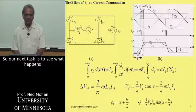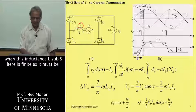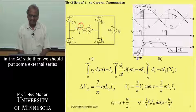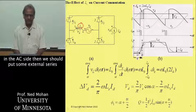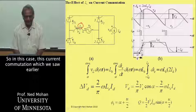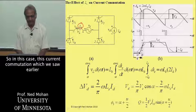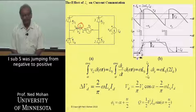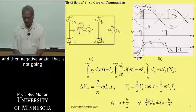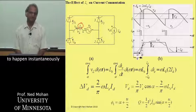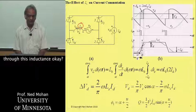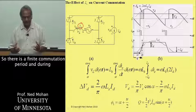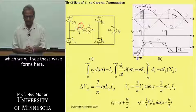Our next task is to see what happens when this inductance L-sub-S is finite, as it must be in these thyristor circuits. If there is not enough inductance on the AC side, then we should put some external series inductance. In this case, the current commutation — which we saw earlier from one thyristor pair to the next on an instantaneous basis, where I-sub-S was jumping from negative to positive and back — is not going to happen instantaneously, because the current I-sub-S is flowing through this inductance, and the current through an inductor cannot change instantaneously.